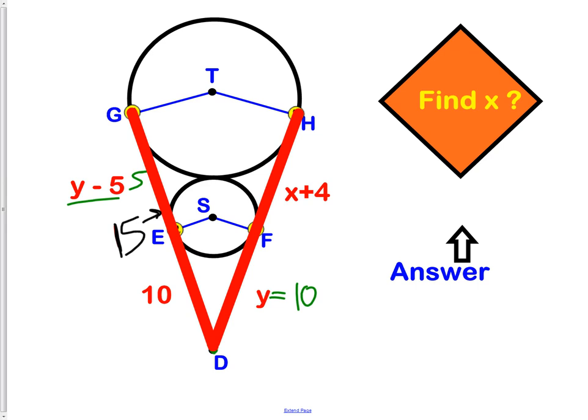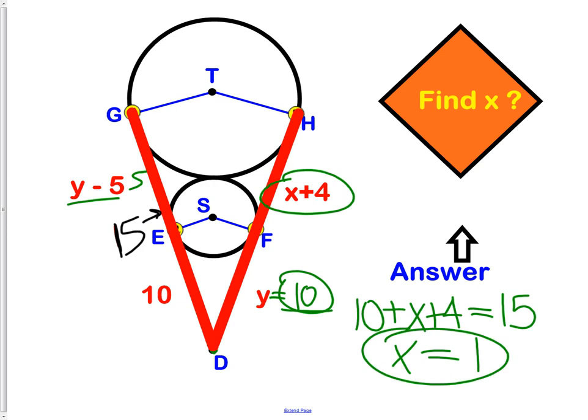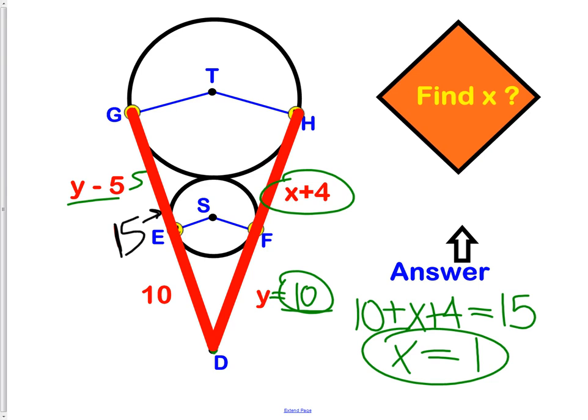So, what we can do here is simply take 10 plus X plus 4, so this piece plus this piece needs to equal 15. Hopefully, you can do the algebra here and get X equals 1. So, we now know the lengths of the two pieces, or the two missing pieces. We now know that X is 1 and Y is 10.